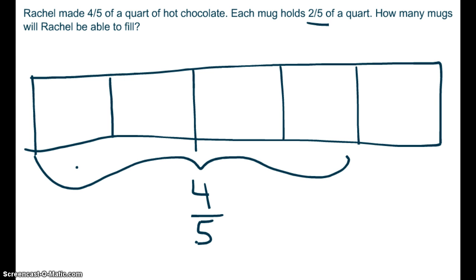Each mug holds 2 fifths. So it's already split for us into fifths. So each mug is going to hold 1 fifth, 2 fifths. That's one mug. The next mug will hold 1 fifth, 2 fifths. So that's 2 mugs.